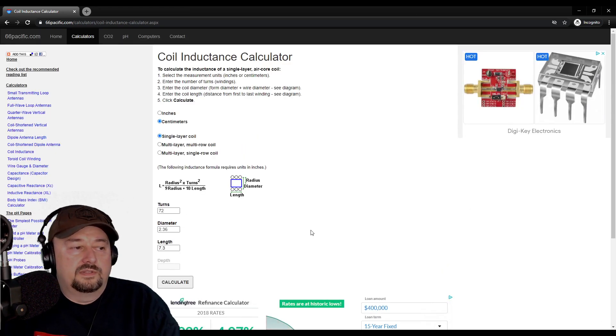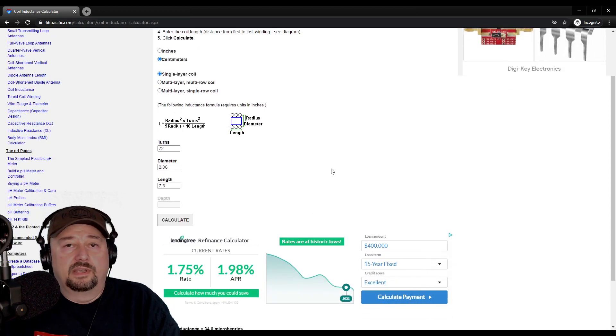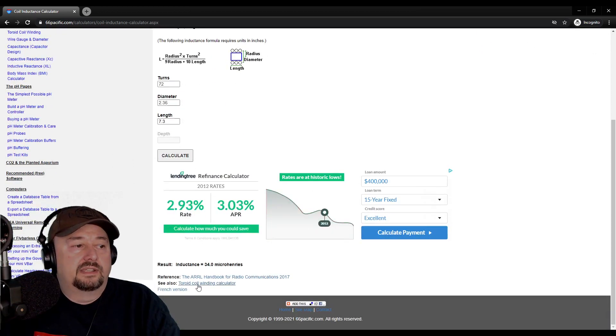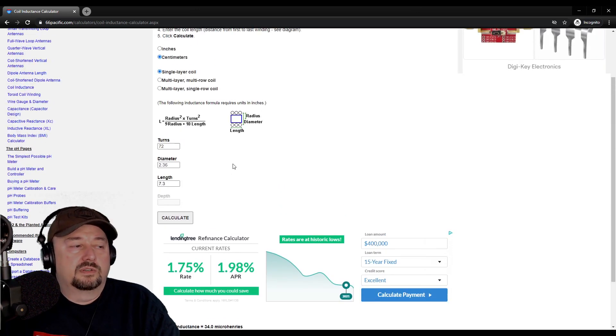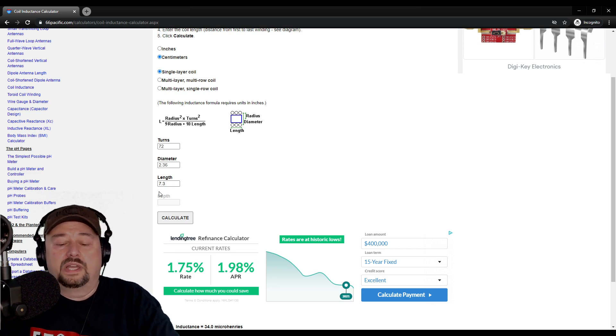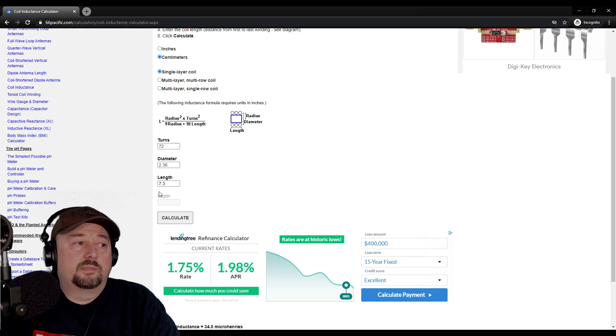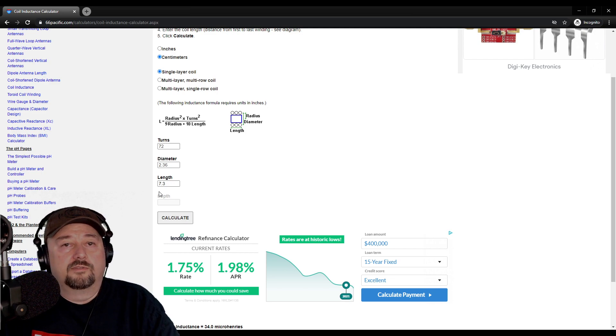And so I'm going to enter in the values that I eventually used for building this coil. So here are the values entered in. I did have to play around with this a lot to figure it out exactly. I will get 34 microhenries, which is the required value, if I do 72 turns with a diameter of 2.36 centimeters for a length of 7.3 centimeters. Now let's take a look at the build and measure the coil, and then I'm going to talk about why the recommended values didn't work well for me.